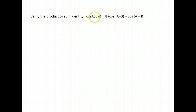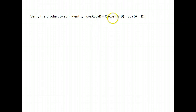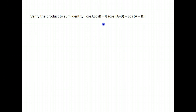This next one is going to work the same way. We're going to prove that cosine A cosine B is equal to one half times cosine of A plus B plus cosine of A minus B. Again, we'll use our sum and difference identities to expand the right-hand side.